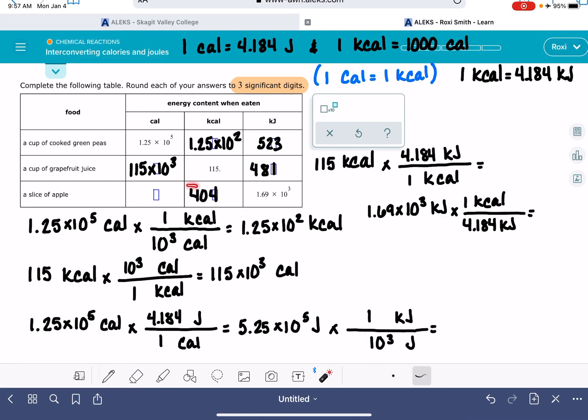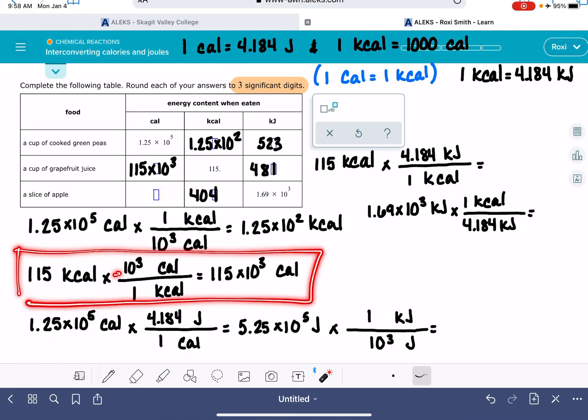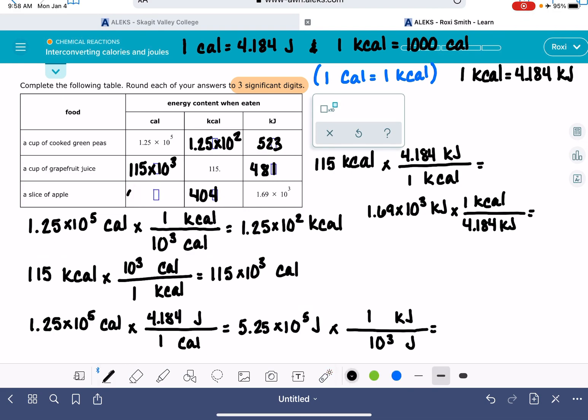And then to go from kcals to calories, that's this conversion right here. We just simply need to multiply by 1,000. 404 times 10 to the third. Again, ALEKS does not want you to put it in this format. ALEKS wants it to be 4.04 times 10 to the 5.